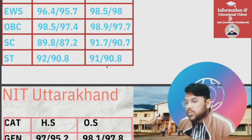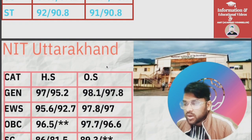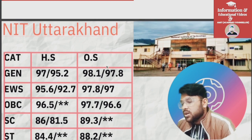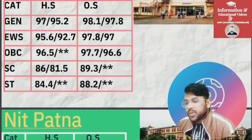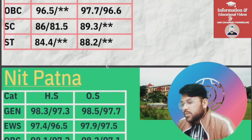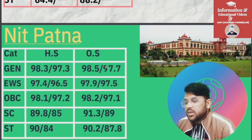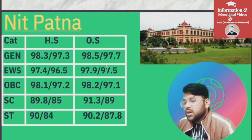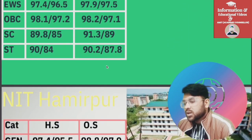For NIT Uttarakhand: General 98.1, EWS 97.8, OBC 97.7, SC 89.3, ST 88.2 — for General, EWS, OBC, SC, ST respectively. For NIT Patna: General 98.5, EWS 97.9, OBC 98.2, SC 91.3, ST 90.2 percentile.